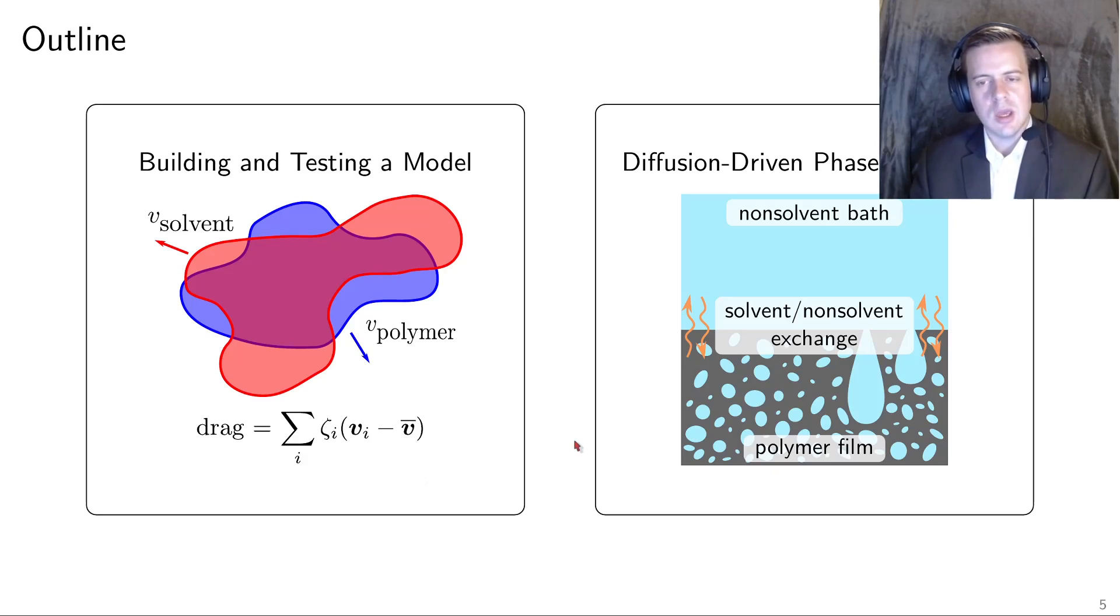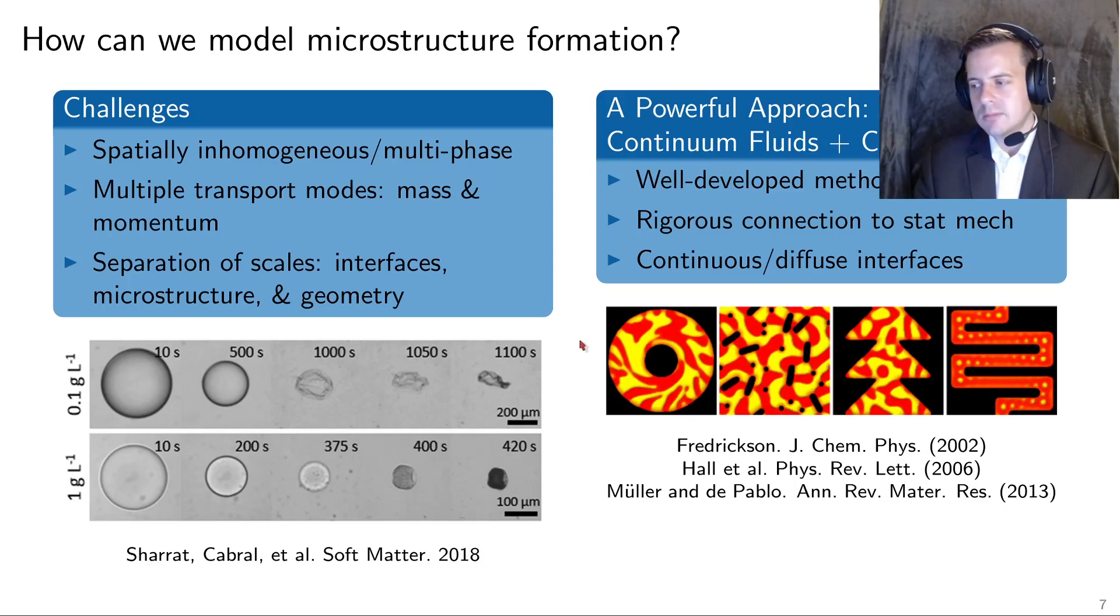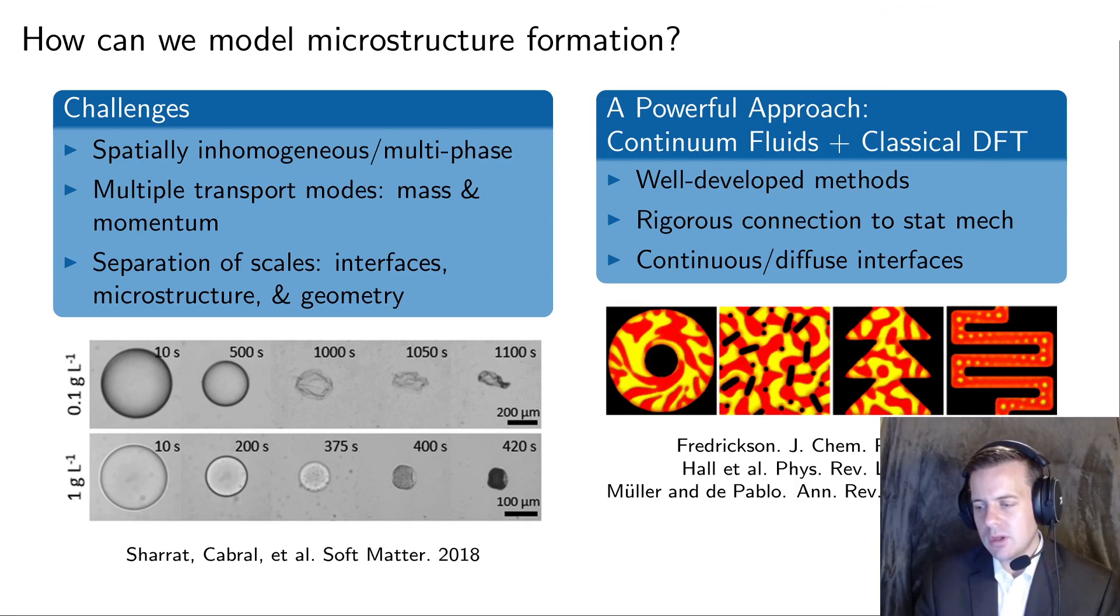There's observed a variety of different microstructures, including sponges and asymmetric sponges. And it turns out that while these have been observed for a long time, a lot of the mechanism of their origin is not particularly well understood. I'm going to talk about two things: first is how do we go about and build and test a model, and then the second is how, once we have that model, how do we actually talk about this diffusive-driven phase separation?